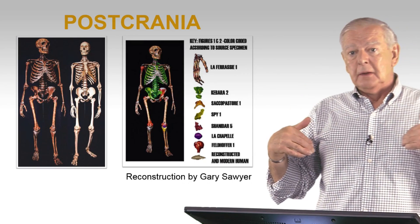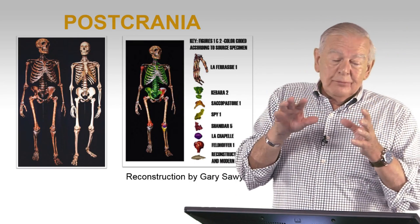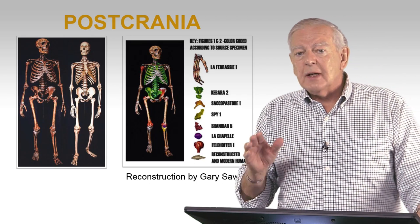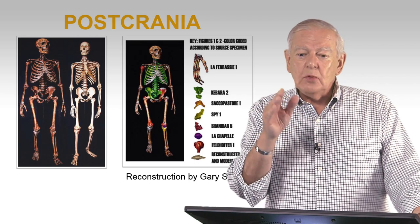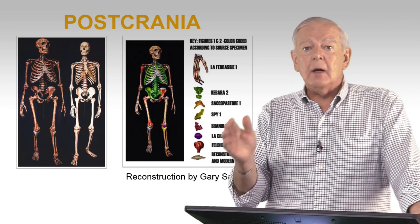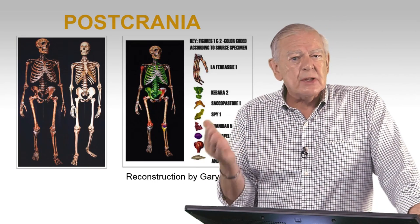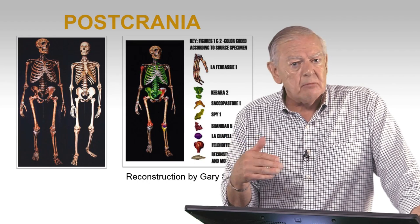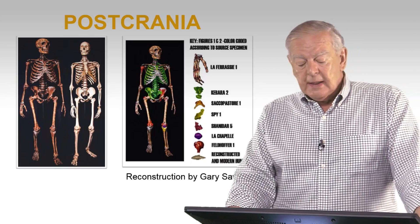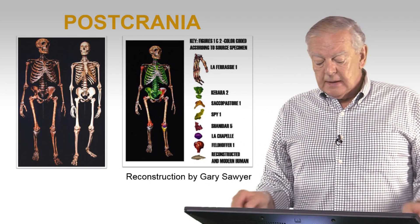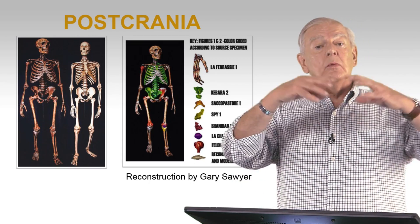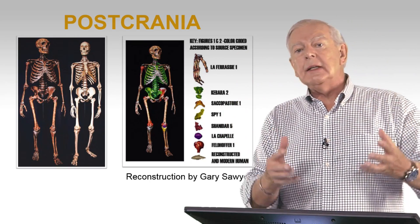What about the postcrania? We're going over just a few things that distinguish Neanderthals from us. It seems that every time somebody begins to study a new aspect of the bony anatomy of Neanderthal, they come up with another distinction. So there are many, many distinctions between them and us. But a colleague, Gary Sawyer, at the American Museum of Natural History, decided to put together a complete Neanderthal skeleton.